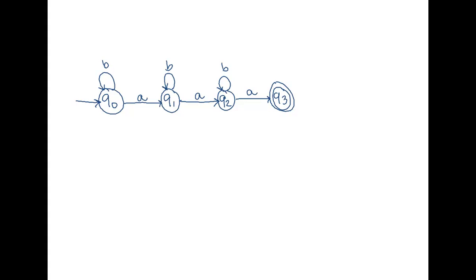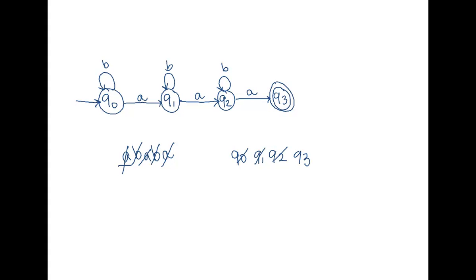Let's try one of our example strings: ABABA. I start my machine. I read my first symbol A, I go to Q1. I read a B, I stay in Q1. I read an A, I move to Q2. I read a B, I stay in Q2. And I read an A, I move to Q3. I finished my string, I was in Q3 at the end, and so I accept. And that's what we wanted.